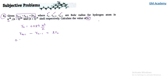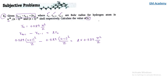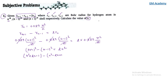So we have 0.529 × (n+1)² / z minus 0.529 × (n-1)² / z equal to 2r(n), which is 0.529 × n² / z. After cancelling z and expanding, we get the simplified expression equal to 2n².